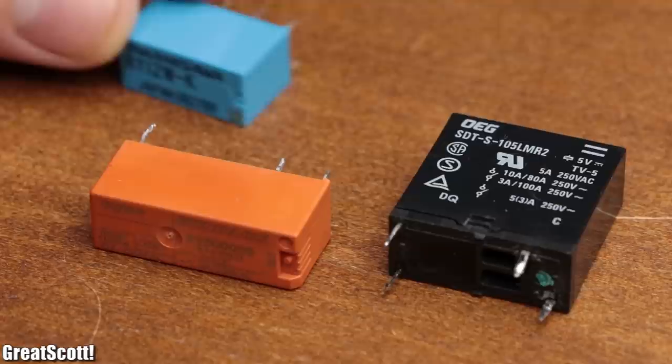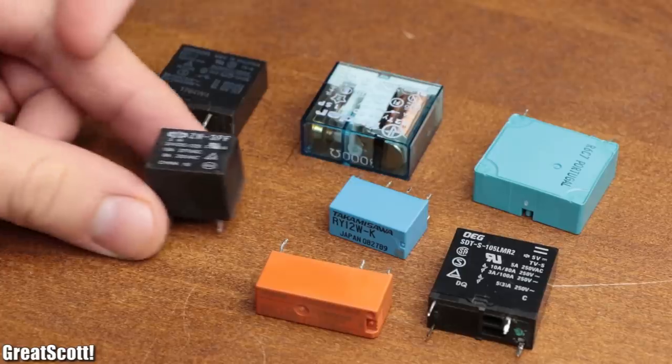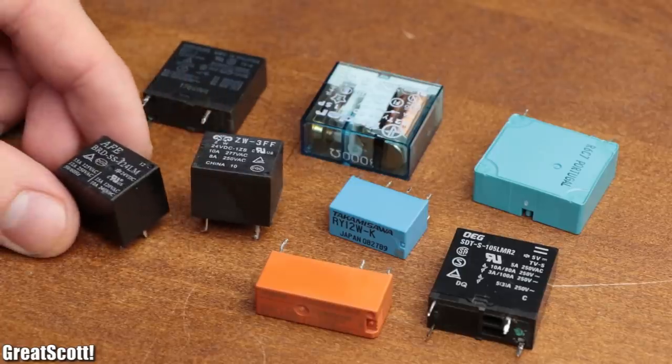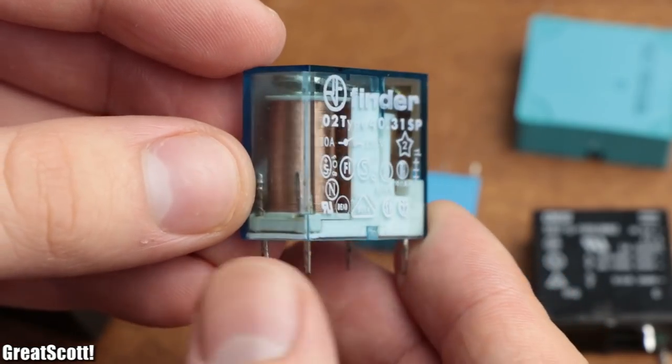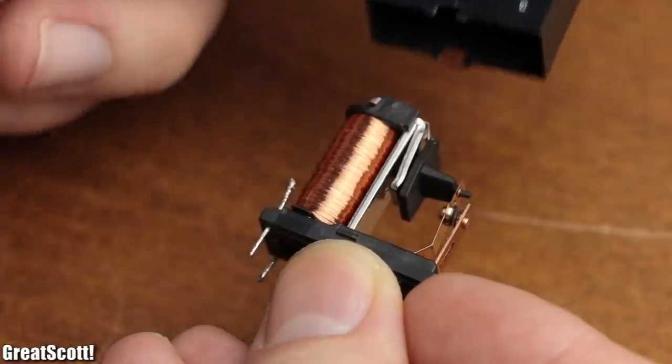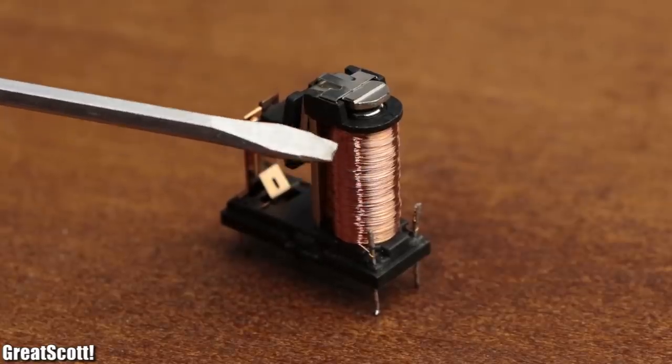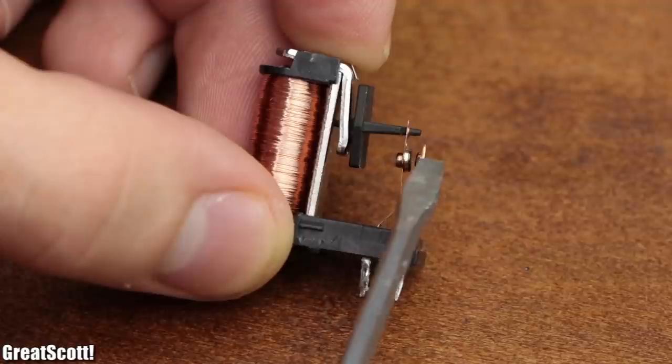First off, let's have a closer look at relays, which exist in a variety of different looks, but in general they all share the same functional principle. If we open one up, we can see that it basically consists of a coil and at least two contacts.